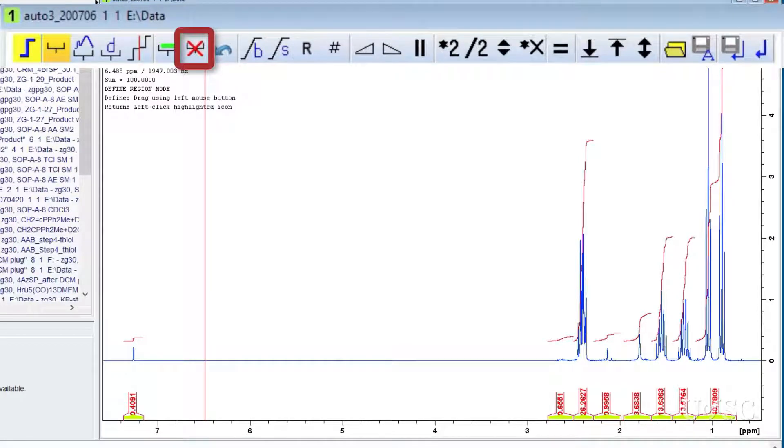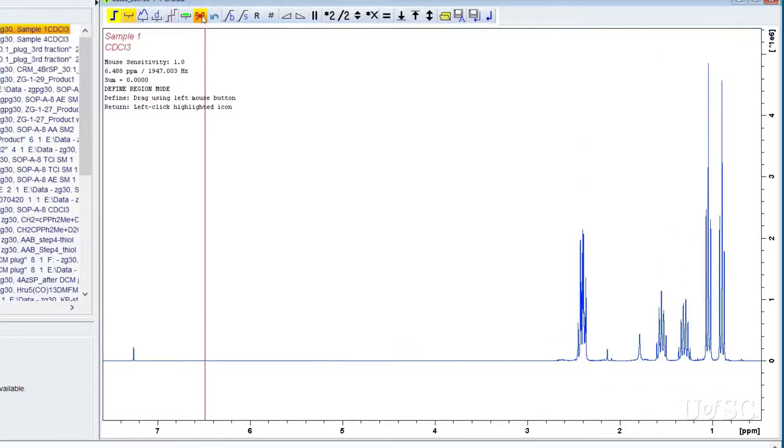The icon with a bracket and red X will delete the selected integrals. You should be left with a non-integrated spectrum.